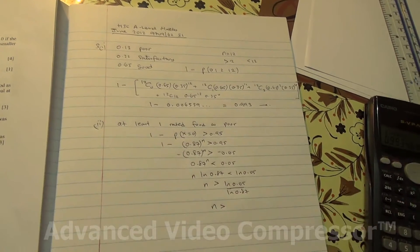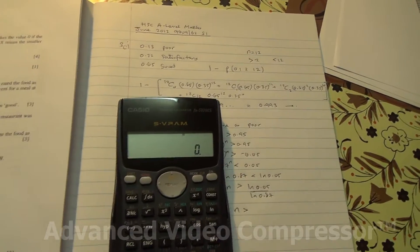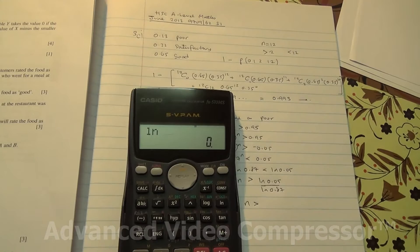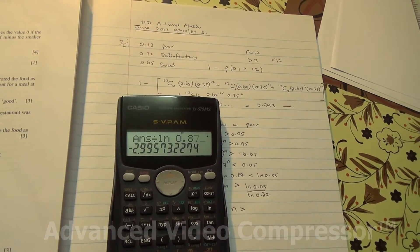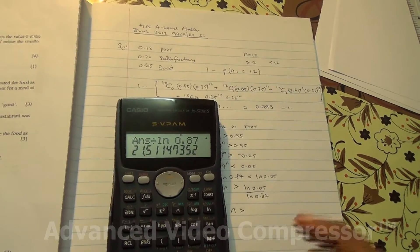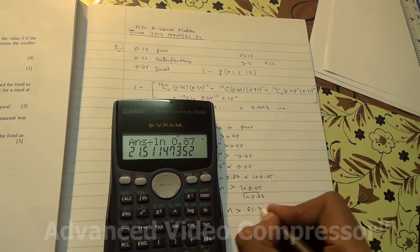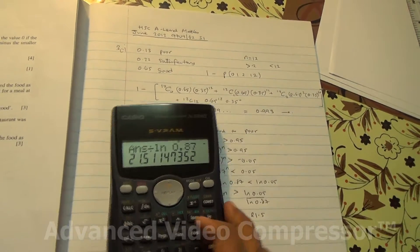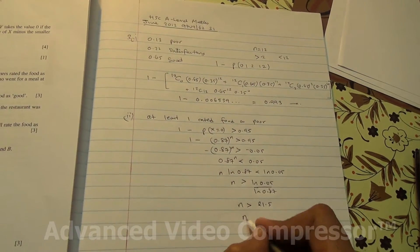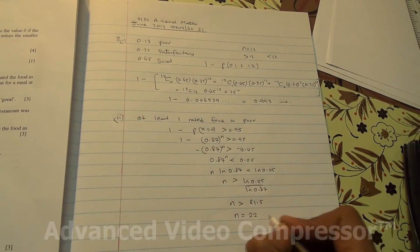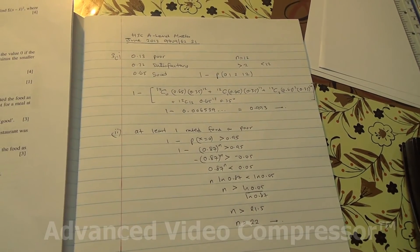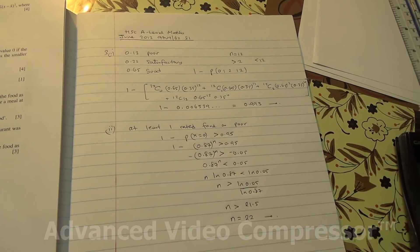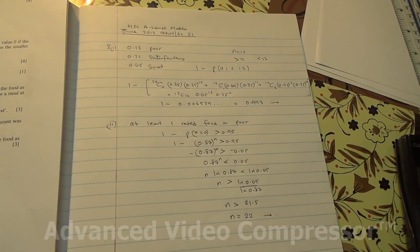So ln 0.05 divided by ln 0.87, then n is greater than, let's check it out. So ln 0.05 divided by ln 0.87, it's going to give us greater than 21.5. Therefore, the least value of n, the smallest value of n, after 21.5 will be 22. Here we are for this question taken from June 2012, Advanced Level Maths, HSC Statistics 1.